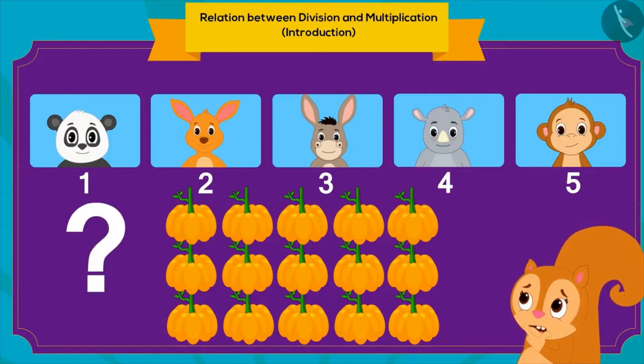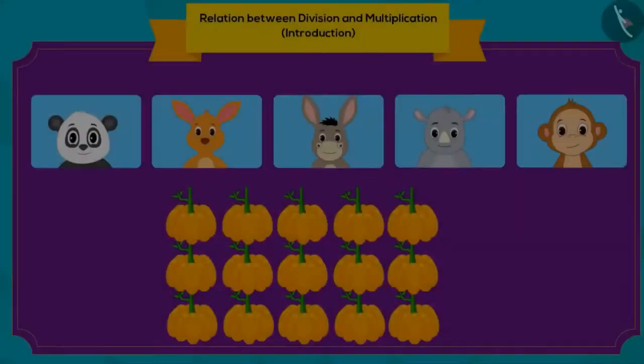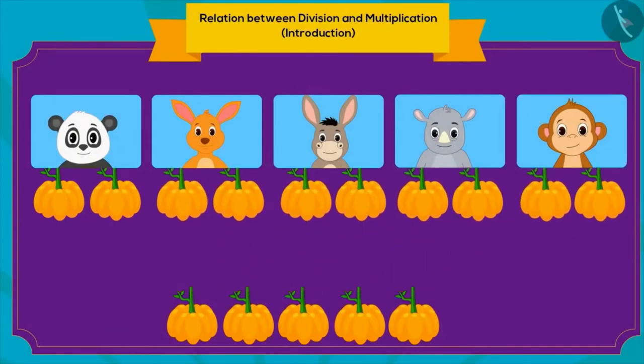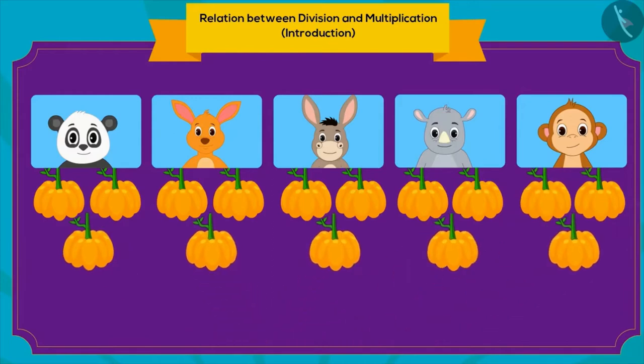Children, can you tell how Chanda will do this? Chanda first gave two pumpkins each to her five friends. Then, she will give one more pumpkin. How many pumpkins will Chanda give to each friend? Three pumpkins.